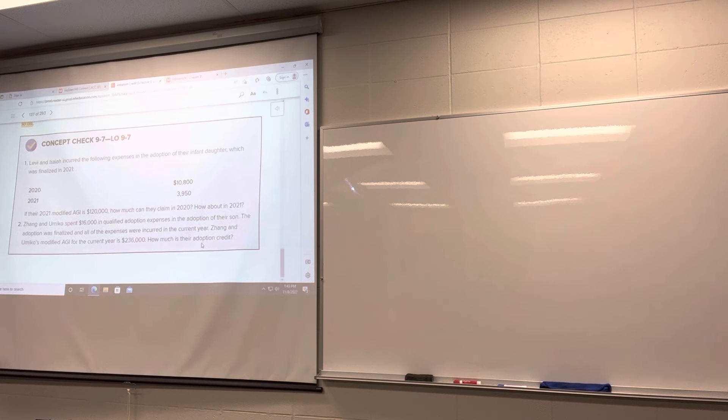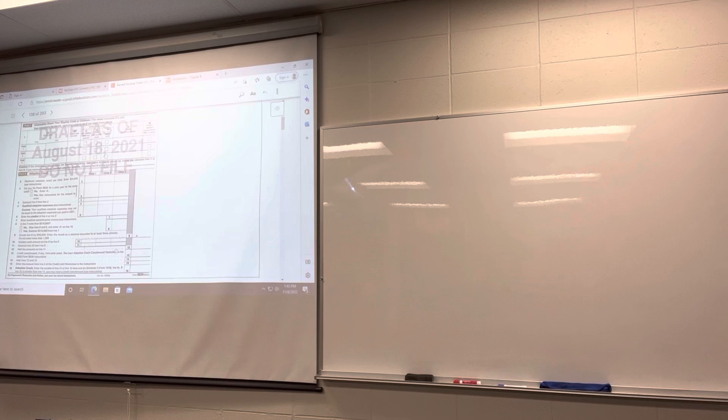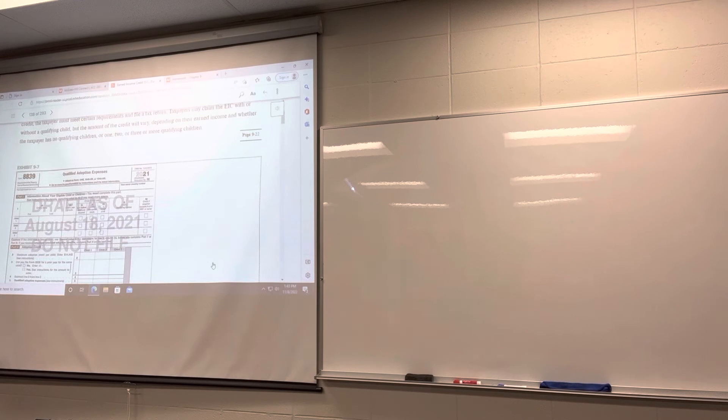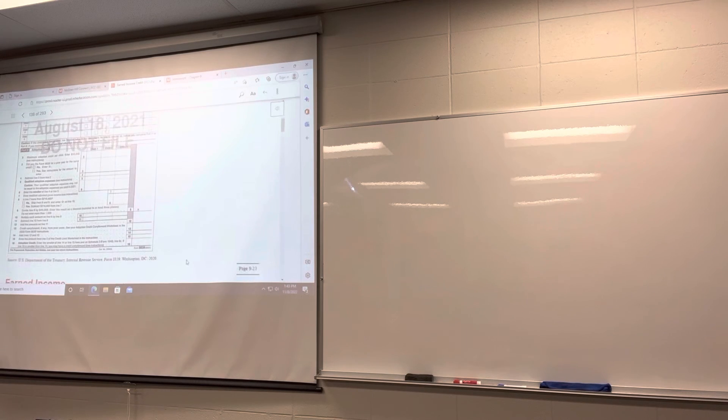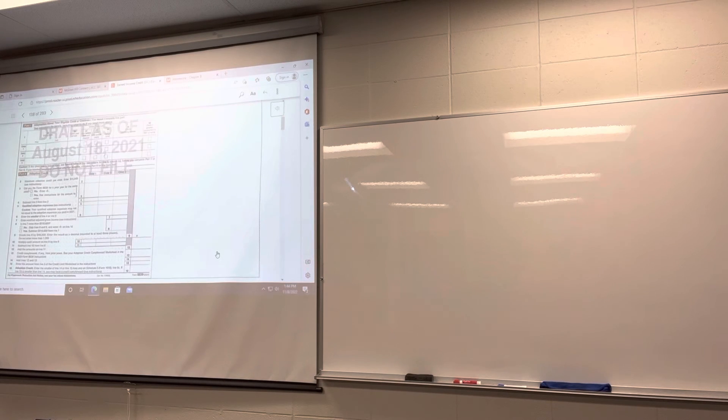Questions about the adoption credit? Oh, here's the adoption credit form. So this is the 8839. You do have to attach the adoption legal paperwork. So you have to file on paper. You couldn't electronically file. With a credit that big, they do want some substantiation for it. All right. Questions?